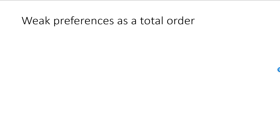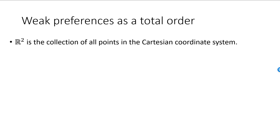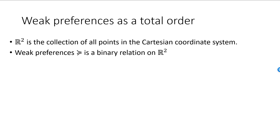Let's take what we know about the total order of a binary relation back to our preferences. R² is the collection of all ordered pairs of two real numbers, and we can think of R² simply as the collection of all points in the Cartesian coordinate system. Since each point in the Cartesian coordinate system is associated with a particular bundle, R² is in our model the collection of all possible bundles of two goods, even though we exclude from consideration points that are not in the first quadrant. Just like greater than or equal to compares two real numbers, the weak preference relation will compare two bundles, each an element of R². Therefore the weak preference relation is a binary relation on R², or to be precise, it's a binary relation on the subset of R² where both coordinates are greater than or equal to zero.